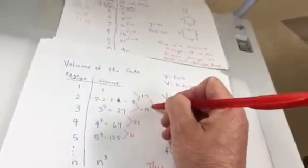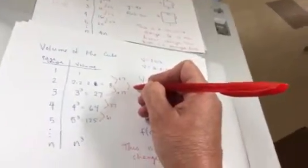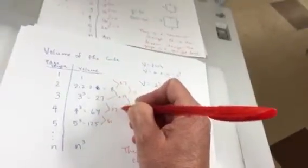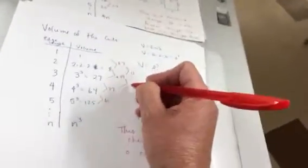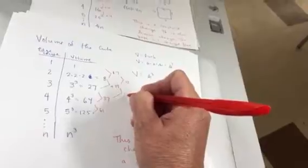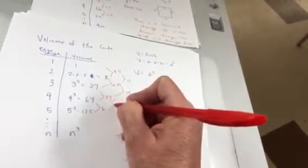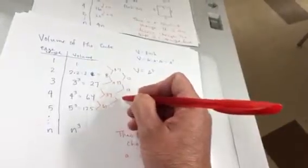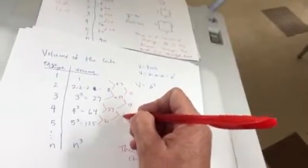What about the difference? Is it second common difference? What's the difference from 7 to 19? 12. How about 19 to 37? 18. At 37 to 61? I think you're right. Yes.